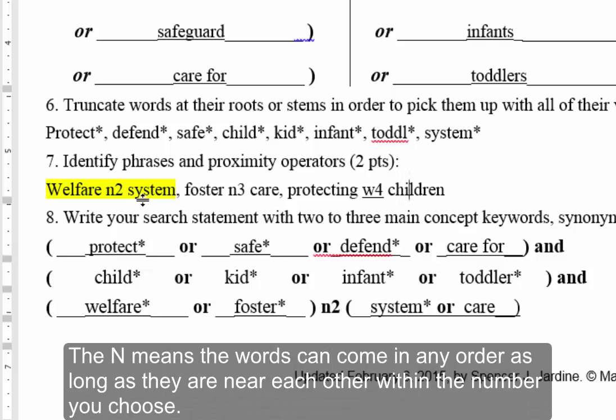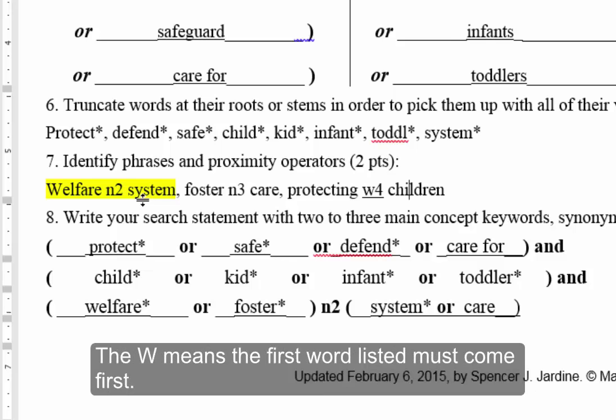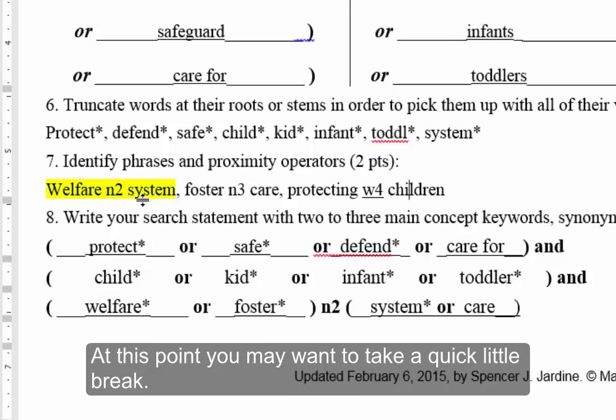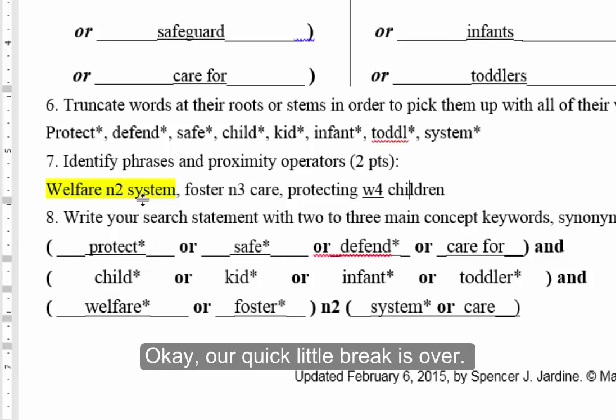The IN means the words can come in any order as long as they are near each other within the number you choose. The W means the first word listed must come first. At this point, you may want to take a quick little break. Okay, quick little break is over.